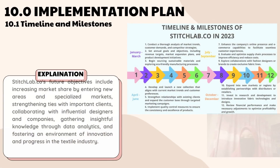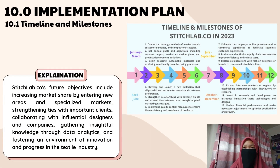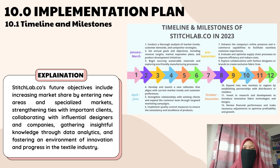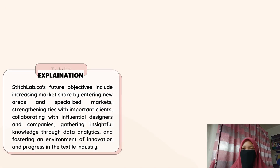Next, I will continue with the implementation plan. First and foremost is timeline and milestones. There is a figure of timeline and milestones for StitchLab.co from January until December 2023. Our future objectives include expanding market share, building strong client relationships, collaborating with influential designers, gathering valuable insights through data analytics, and fostering innovation in the textile industry.